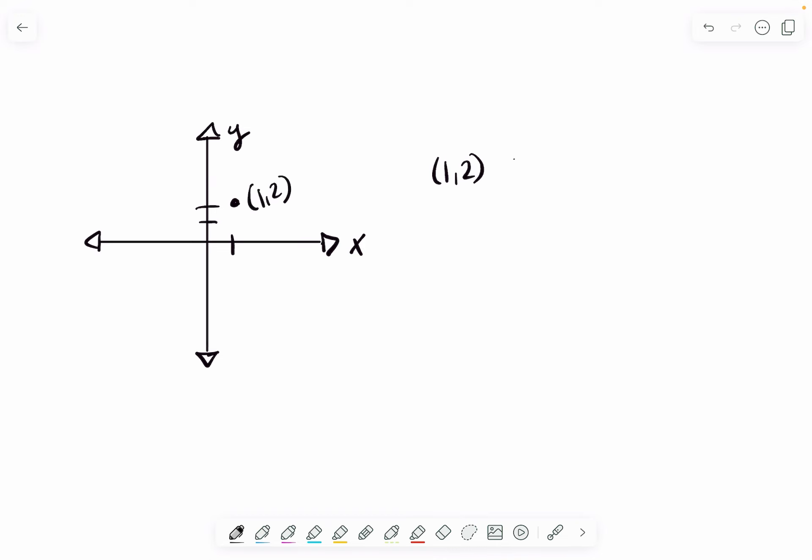We say that this point is an element of—that's what this symbol means—all real numbers in a two-dimensional space. Why two-dimensional space? Because every point only has two entries. So this here is our 2D world.